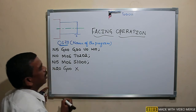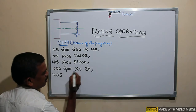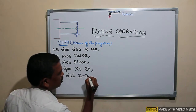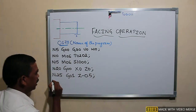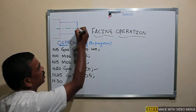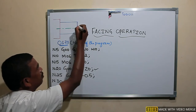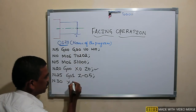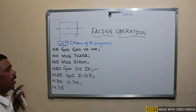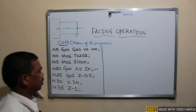G00 X0 Z0 — and then I want to do the facing operation, so I will give a depth of cut of 0.5mm here. According to this instruction the tool will be positioned, then I will give the depth of cut of 0.5mm and do the facing operation by moving the tool from center out to the periphery, to X34. After that I will move the tool again to Z minus 1mm.